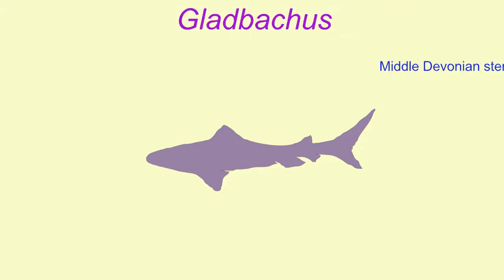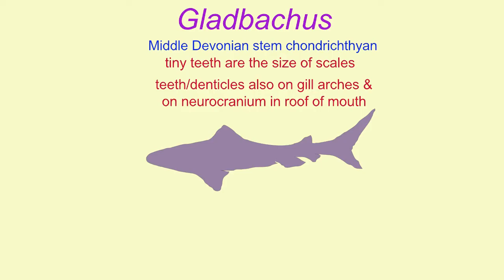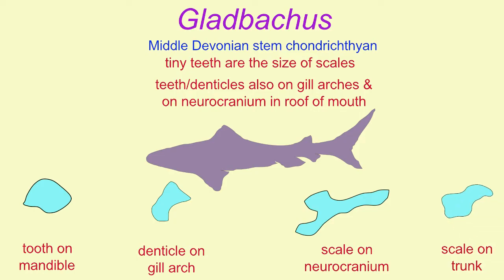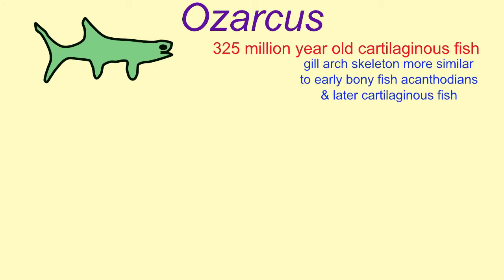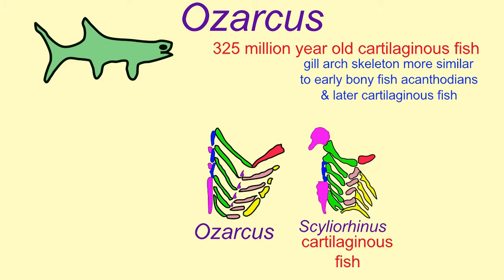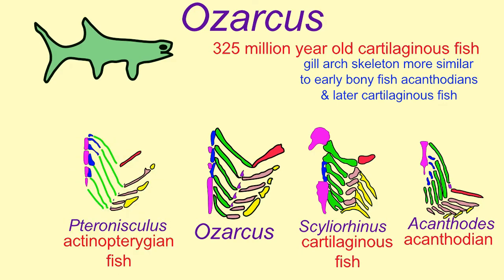Not only are these groups intermediate, but there are also cartilaginous fish which have features of the bony fish in the fossil record, and acanthodians which are more similar to the cartilaginous fish than others. In this nested hierarchy, we see varying degrees of relationship, reflecting the gradual evolution of intermediate forms.